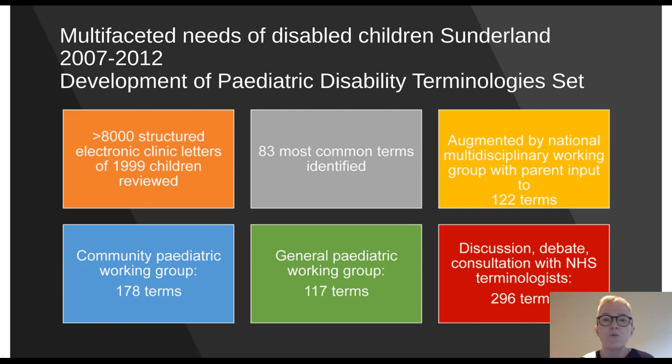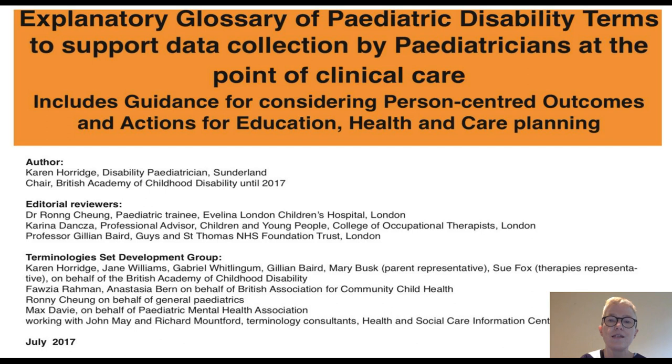There were two other working groups — a community paediatric working group and a general paediatric working group — that came up with separate lists of common terms for consideration. Then the real work began when we needed to be moderated by NHS terminologists who helped us debate, discuss and agree, so that we had a final list of 296 terms that we wanted to encourage people to use.